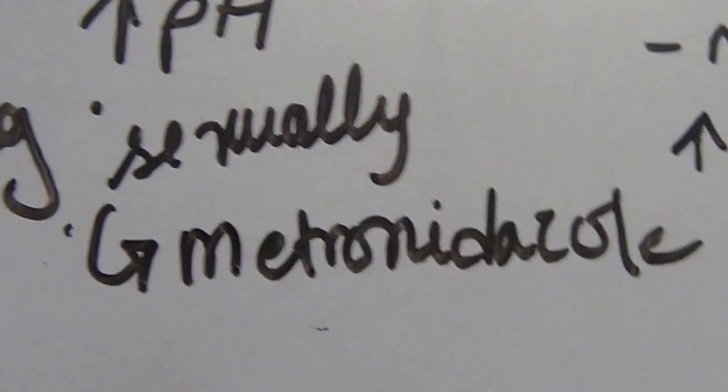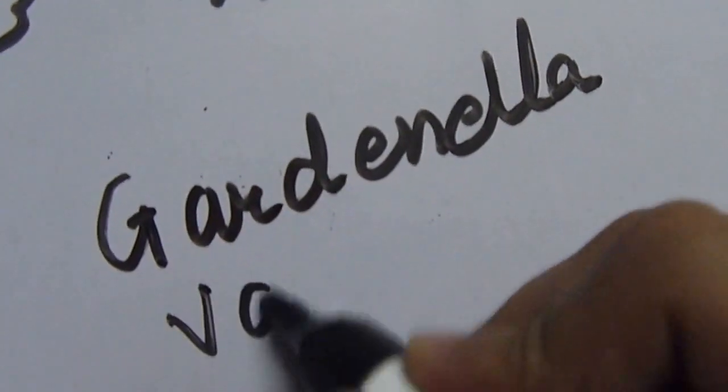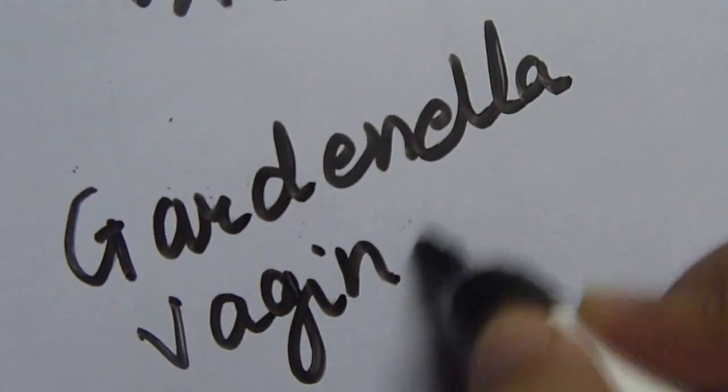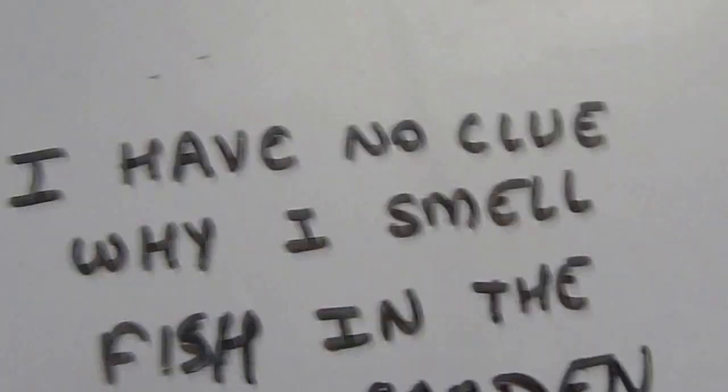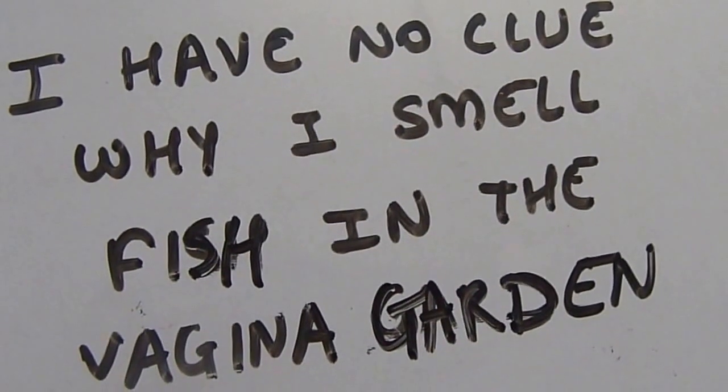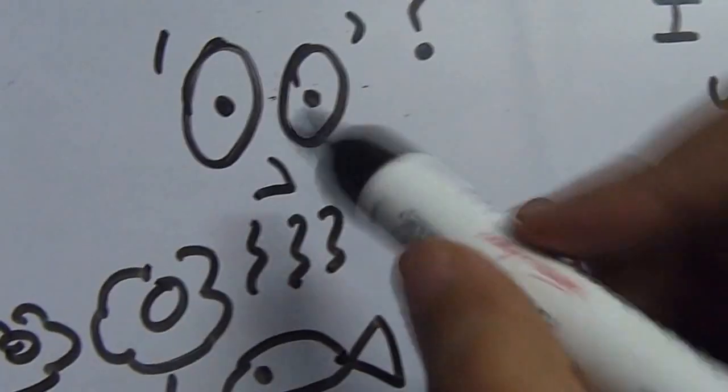Let's go to Gardnerella vaginalis now. The mnemonic for Gardnerella vaginalis I got online and it says: I have no clue why I smell fish in the vagina garden. So you can think of a guy who's smelling fish in a garden.